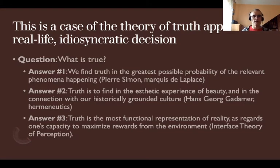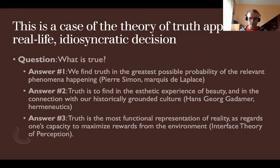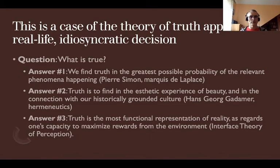It might be misleading, yet it is the way we shape our understanding. Finally, answer number three: truth is the most functional representation of reality as regards one's capacity to maximize rewards from the environment. This refers to the interface theory of perception. When I have different claims about reality, I try to understand which is most in line with the rewards I expect to get from the environment. Rewards here are a broad category — the absence of danger or punishment is also a reward in that sense.